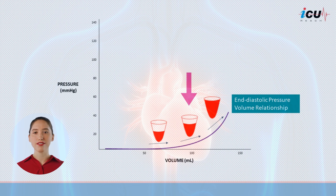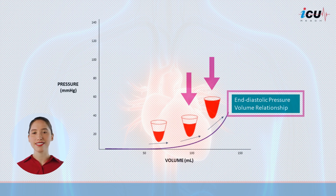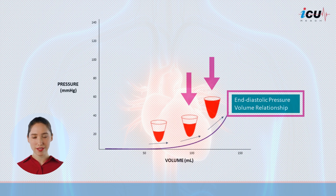However, as the ventricle continues to fill and reaches higher volumes, the pressure rises more steeply, reflecting increased stiffness of the ventricular walls. This graph depicts what we call the end-diastolic pressure volume relationship, known as the EDPVR curve.